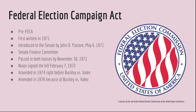Before the Federal Election Campaign Act came the Tillman Act of 1907, named after Benjamin Tillman, which banned corporate contributions to campaigns. There was also the Federal Corrupt Practices Act passed in 1910, then the Hatch Act in 1939, the Smith-Connolly Act of 1943, and the Taft-Harley Act of 1947. All these acts addressed corruption in the federal campaign world.